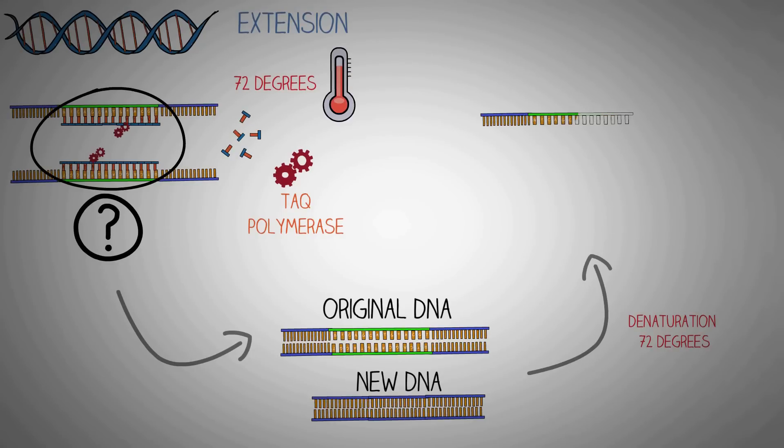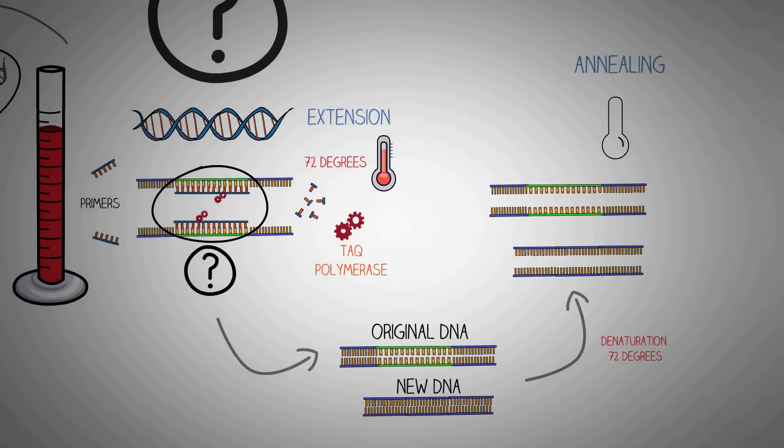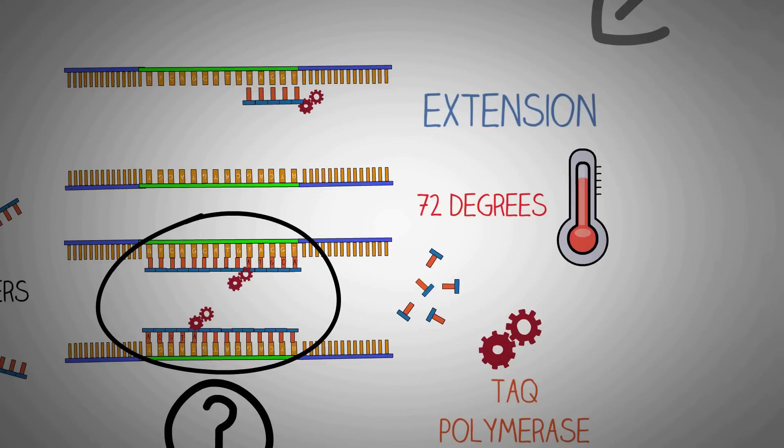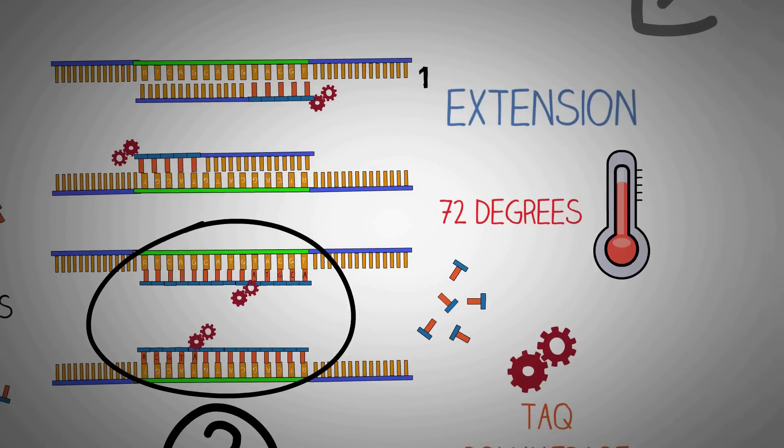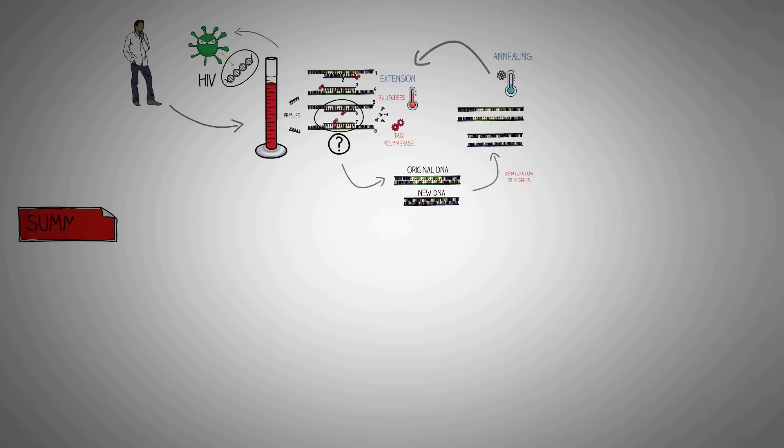These steps are repeated again and this is what makes the PCR a chain reaction. Basically, the products of the first reaction are used as the substrates for the next reaction. Now when we cool down the temperature to 55 degrees for annealing, we will get four single-stranded DNAs. Now the Taq polymerase comes in for extension and this time it leads to synthesis of four new single-stranded DNAs because the substrates for the enzyme are also double now. So from the second cycle of the PCR we get one, two, three, four, five, six, seven, and eight new strands of DNA. These steps are repeated again and again and this is what makes the PCR a chain reaction.